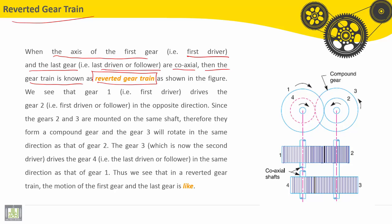As shown in this figure, here we have the first driver, gear number one. It is coaxial with the gear number four, which is the last driven or follower. We see that gear one drives the gear two in the opposite direction here. This is gear two, this is gear one.